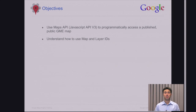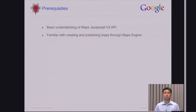Part of using the JavaScript API to access a map published in Maps Engine requires us to specify the map and layer IDs, so we will also take a look at where to find this information in the Maps Engine console. To fully understand the content covered in this module, it is best that you have a basic understanding of JavaScript version 3 of the Maps API.